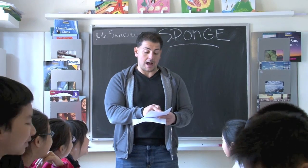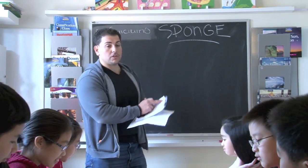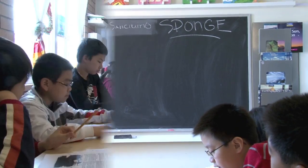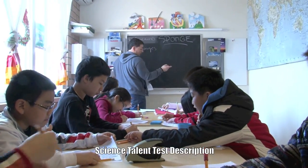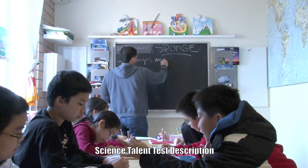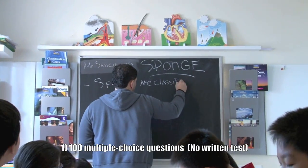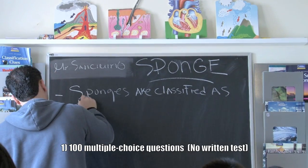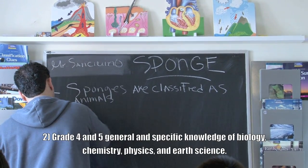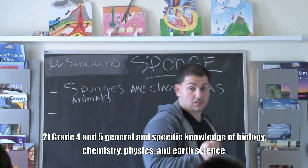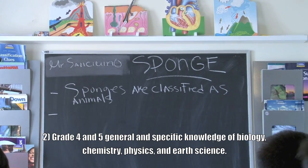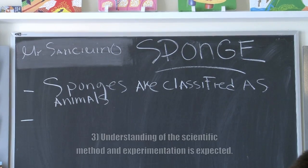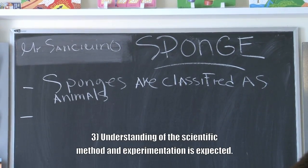It says 'sponge.' Who's going to start reading? Sponge equals animal. Write that down, make a note. Sponges are classified as animals. That's important, write that down — that's your first note. So the most important thing we learned so far from that whole paragraph is that sponges are classified as animals.